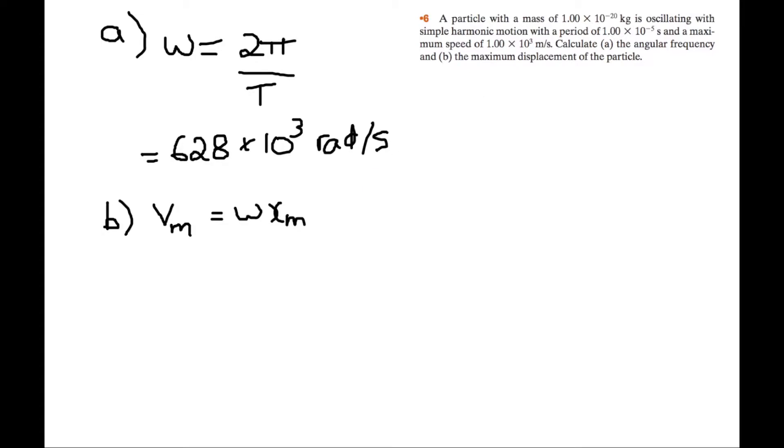We know the maximum speed is 1×10^3 m/s. We know the angular frequency is 628×10^3 radians. So Xm equals 1.00×10^3 over 628×10^3.